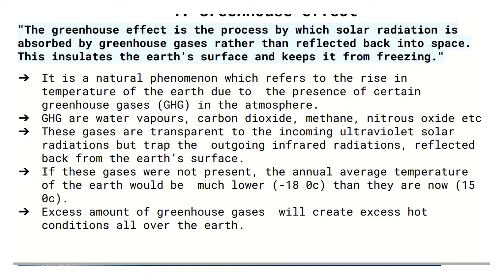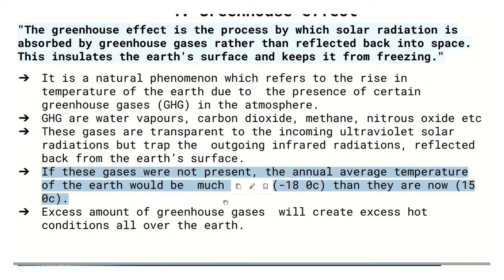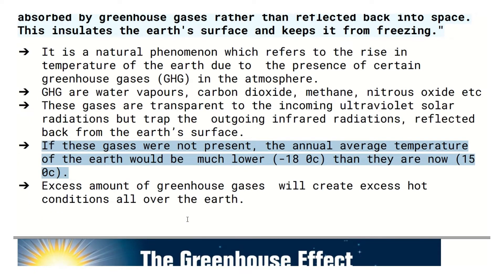If these gases were not present, the annual average temperature of the earth would be much lower than it is now. Without these gases, the temperature would be minus 18 degrees Celsius. Currently, the temperature is 15 degrees Celsius.